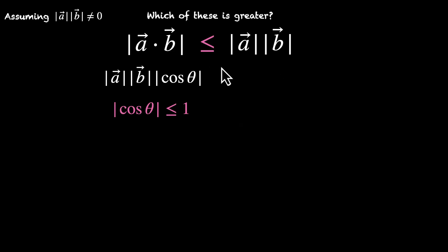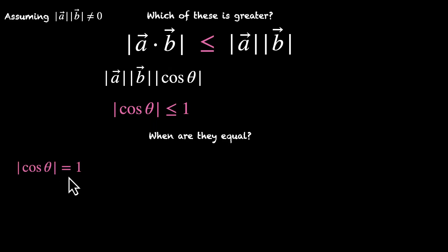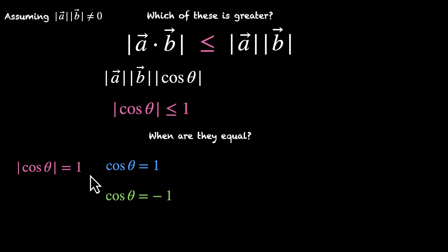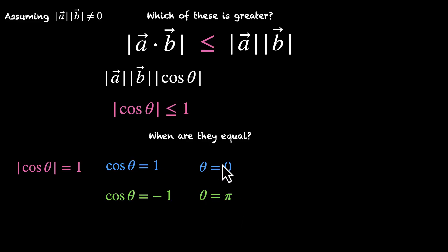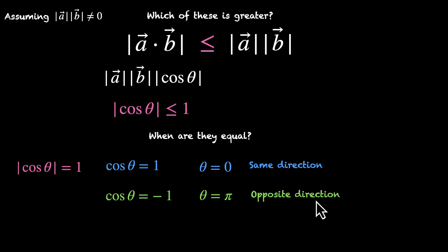Now, when are these two sides equal? They're equal when mod of cos theta does not bring the left-hand side down — that is, when mod of cos theta is exactly equal to 1. That happens when cos theta equals 1 or cos theta equals minus 1. When cos theta equals 1, theta equals 0. When cos theta equals minus 1, theta equals pi. So what's happening when the angle between the two vectors is 0 or pi? If it's 0, they're facing the same direction. If it's pi, they're facing the opposite direction. In both cases, we can say that these vectors are collinear.